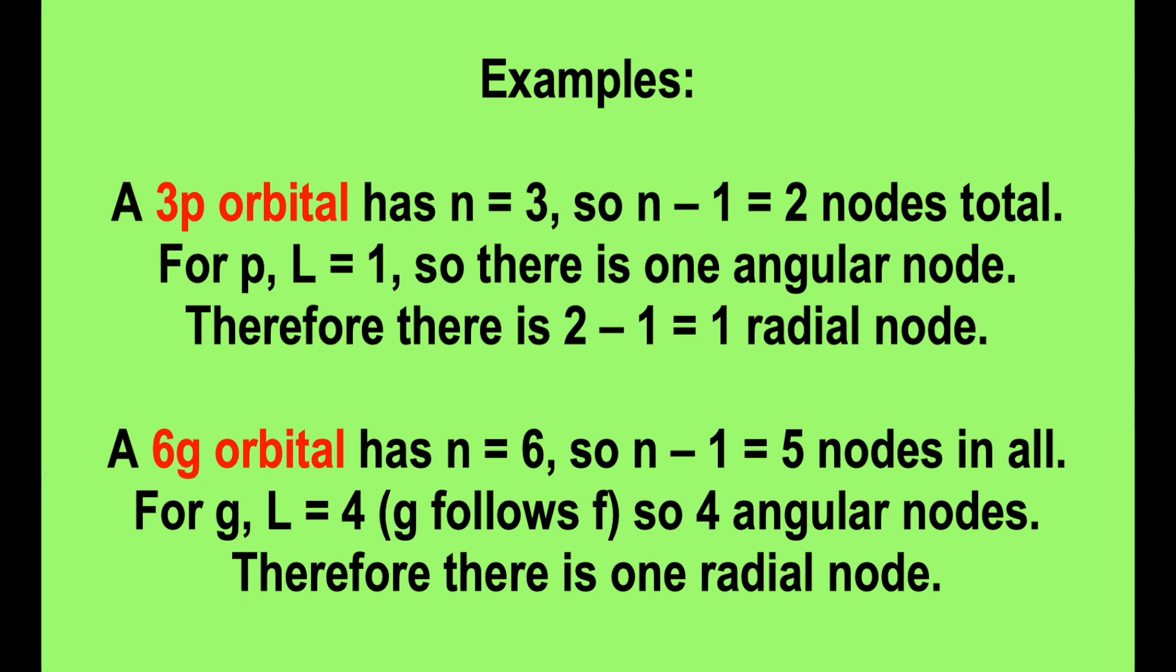A 6g orbital has n equals 6, L equals 4, so 4 angular nodes, 5 in all, one radial node.